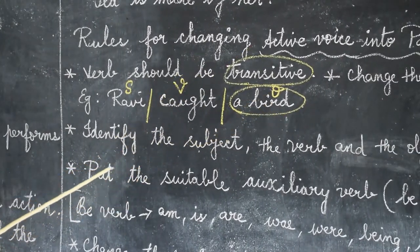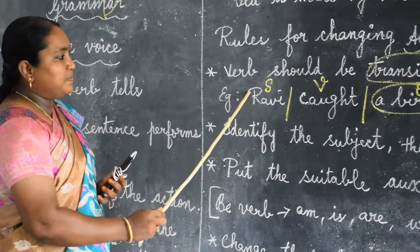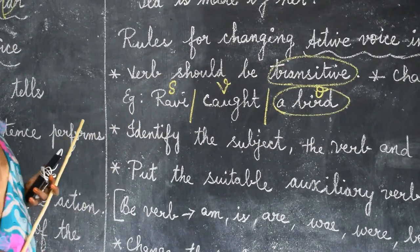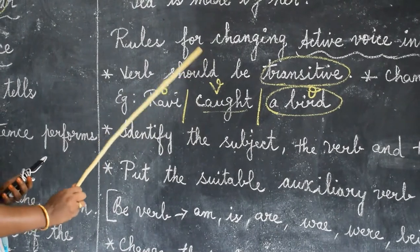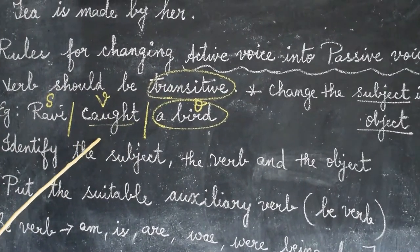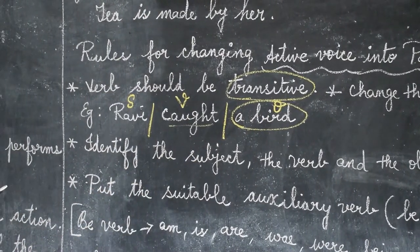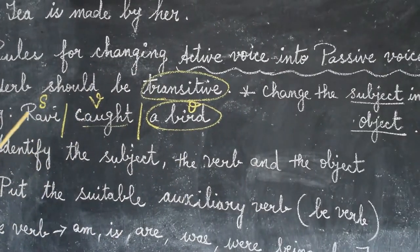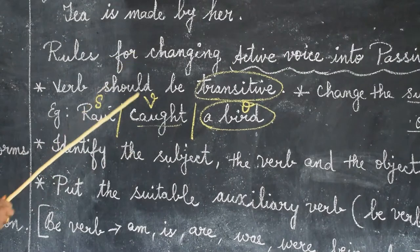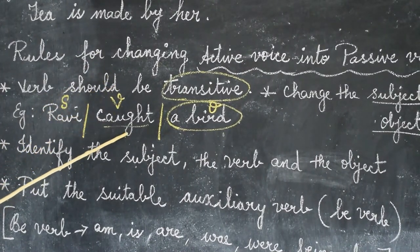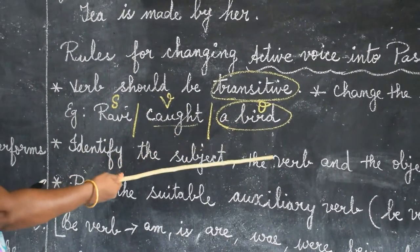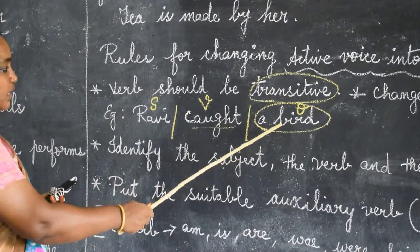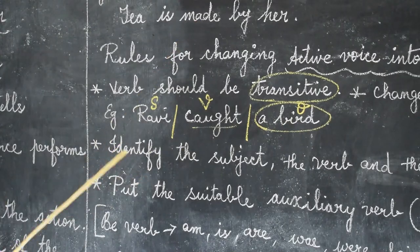If the sentence has an object, it is said to be a transitive sentence with a transitive verb. To change into passive form, we should have a transitive verb — we need an object. If the sentence doesn't have an object, we can't change it into passive form. First you have to identify the subject, verb, and object. If the verb answers what or whom, that is the object.